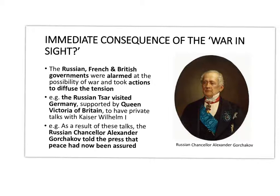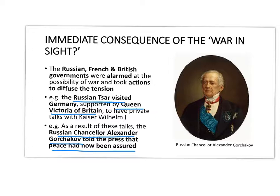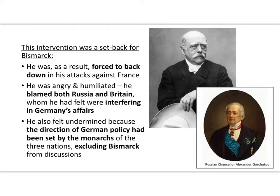Bismarck's strategy of creating alarm about the possibility of war was supposed to put pressure on the French, but actually it put pressure on the Russians and Queen Victoria of Britain. Tsar Alexander II visited Germany, and Queen Victoria stepped in — both having private talks with Kaiser Wilhelm I. As a result, Russian chancellor Alexander Gorchakov suddenly announced to the press that peace had now been assured, that the monarchs had worked together and there was no risk of war.